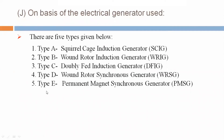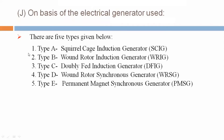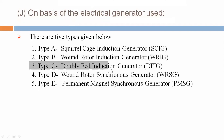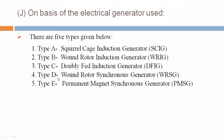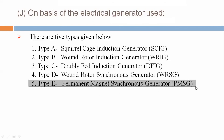J: On the basis of the electrical generator used, there are five types. Type A: Squirrel Cage Induction Generator (SCIG). Type B: Wound Rotor Induction Generator (WRIG). Type C: Doubly Fed Induction Generator (DFIG). Type D: Wound Rotor Synchronous Generator (WRSG). Type E: Permanent Magnet Synchronous Generator (PMSG).